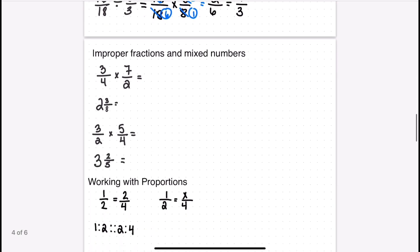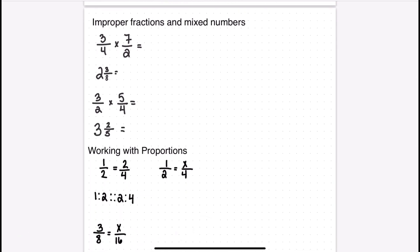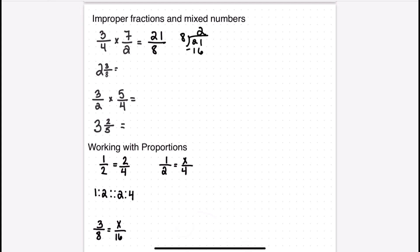Next, let's work with improper fractions and mixed numbers, which did appear on my HESI exam. Multiplying three over four times seven over two: three times seven is twenty-one and four times two is eight, leaving twenty-one over eight. To convert to a mixed number, divide eight into twenty-one — it goes in twice. Two times eight is sixteen, subtract from twenty-one to get five, giving us two and five eighths.